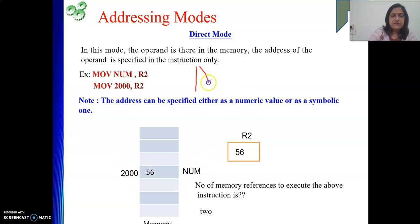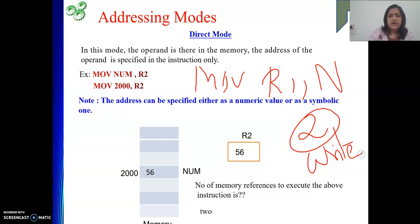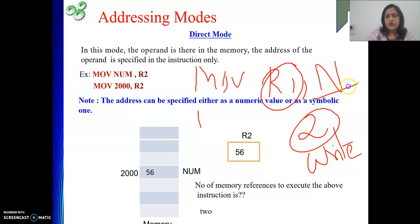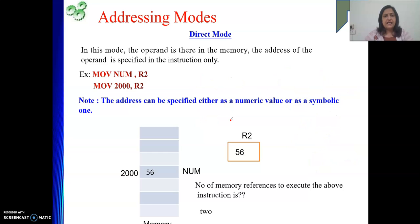Similarly, MOVE R1, NUM would also take two memory references — one to fetch the instruction, and then a write operation to store the content of R1 into the memory location represented by N. So we have referred to memory a total of two times. This covers implied, immediate, register, and direct modes. The next part will cover indirect addressing mode. Thank you — if you like my videos, please like, share, and subscribe to my channel.